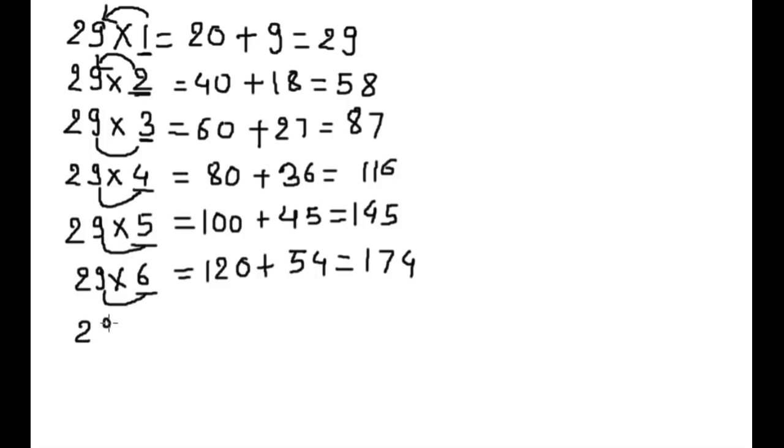29 into 7. Double of 7 is 14. Put 0 plus 9 into 6. 9 into 7 is 63. 203.